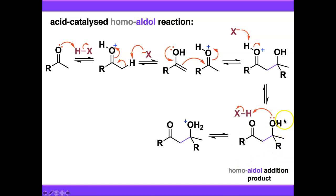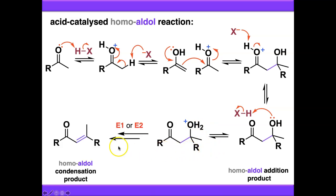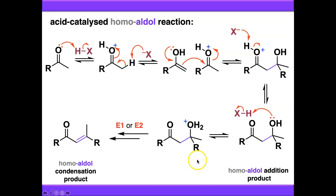Under acidic conditions we can protonate this OH group to form OH2+ which is obviously a much better leaving group. Rather than E1CB elimination — which only occurs under basic conditions — we now have access to E1 or E2: either a carbocation forms and then gets deprotonated, or everything happens at once. So it doesn't really matter if your aldol reaction is under basic or acidic conditions — the mechanisms are broadly the same — but the practicalities of how they work and the type of selectivity you can get are different, and we'll talk about that in session.